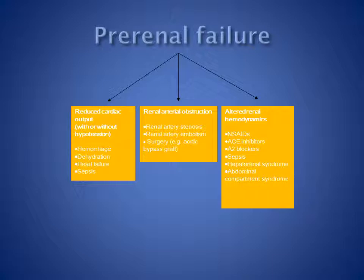There can be localised renal arterial obstruction — for instance, in renal artery stenosis due to atheromatous disease, or renal artery embolism, for instance in patients with atrial fibrillation, or due to surgery such as aortic bifurcation grafts. Renal haemodynamics can be altered by drugs such as non-steroidal anti-inflammatory drugs, ACE inhibitors, and angiotensin 2 receptor blockers, as well as by sepsis, hepatorenal syndrome, and abdominal compartment syndrome.